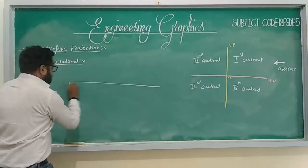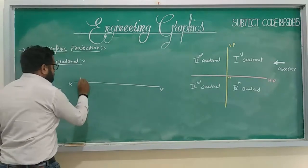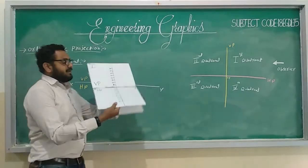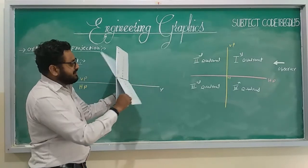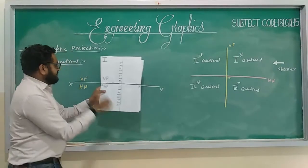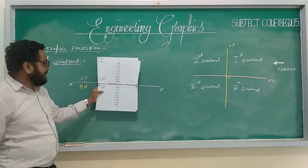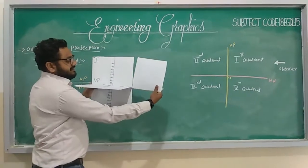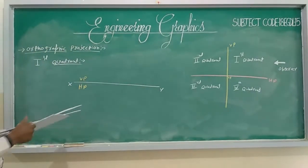So first we will draw the XY line. We always rotate the horizontal plane in the clockwise direction. VP is above the XY line and HP will come below the XY line. Like this we can represent the first quadrant. Side view will come on the right side and left side. This is the first quadrant.